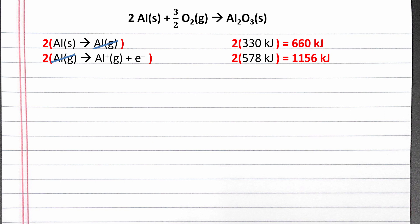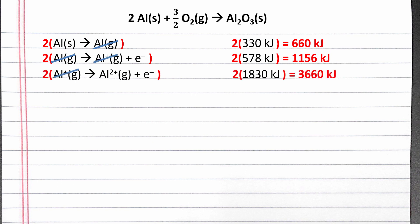The next information we're given is the second ionization energy of aluminum, which is the amount of energy required to remove the second electron from an already positive gaseous aluminum cation. We multiply this equation by two to cancel out the two moles of Al1+ product from the previous equation. The third ionization energy is the energy required to remove the third electron from gaseous Al2+. To cancel out two moles of gaseous Al2+ product from the previous step, we multiply this equation by two as well.